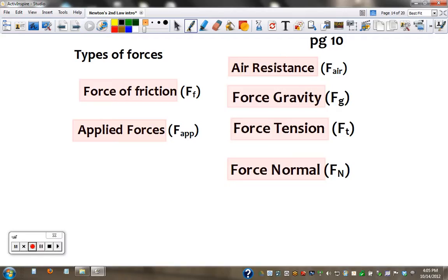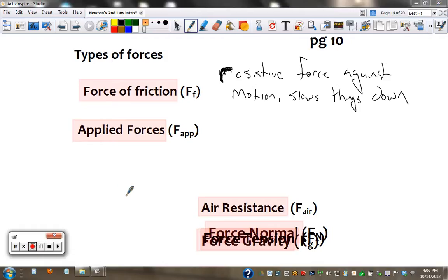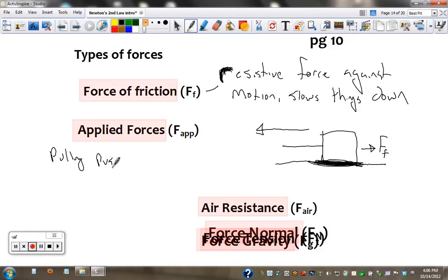Okay. Types of forces. Friction is a resistive force against motion that slows things down. So if you have a box on the ground and you're pulling it with a rope, there's friction between the box and the ground. And that's force of friction. Against. This is the next one. Applied force. Could be anything. Pulling. Pushing. Kicking. Engines. We call engines an applied force in a car. Car engines. So if you're pulling with an applied force, friction is fighting against you, slowing you down.